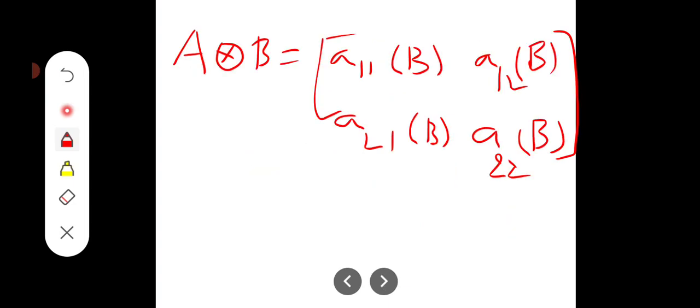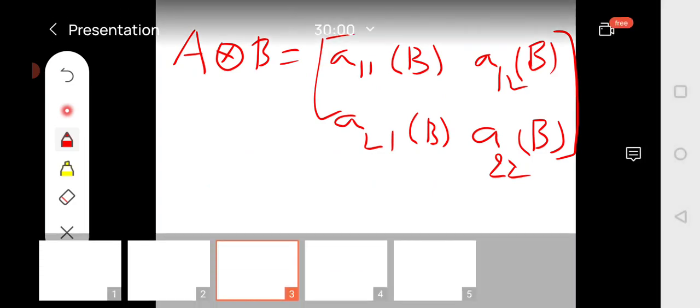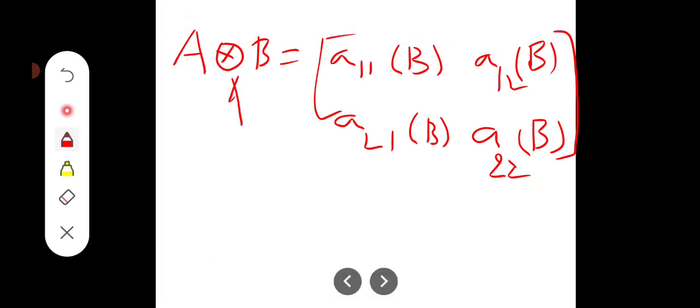So if you see the Kronecker product of these two, we can represent A11 into B, A12 into B, and so on. Each and every element of A matrix multiplies the second matrix B. That is nothing but the Kronecker product. This is the symbol for Kronecker product.